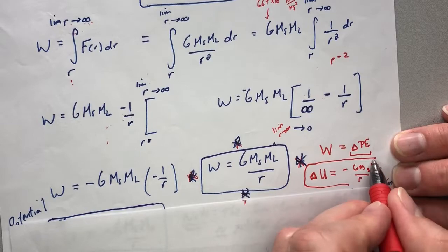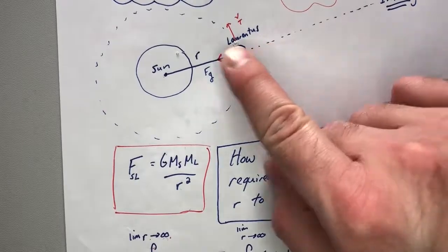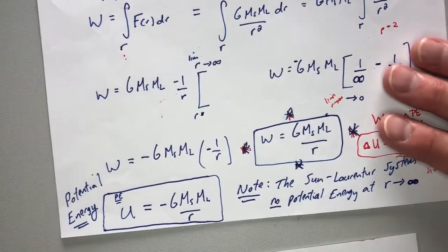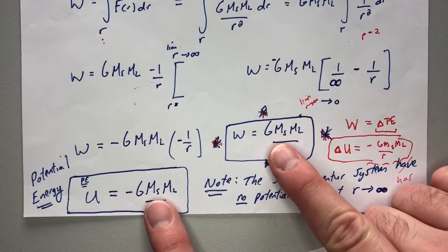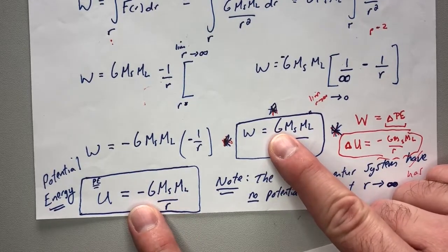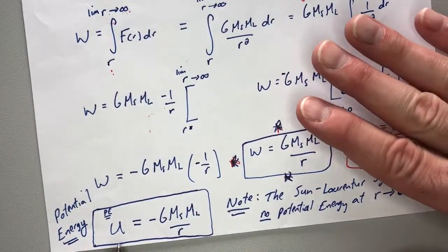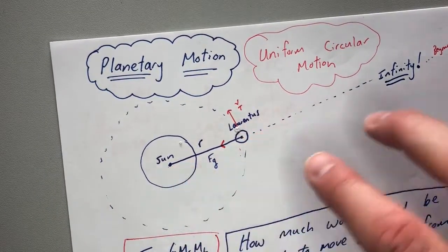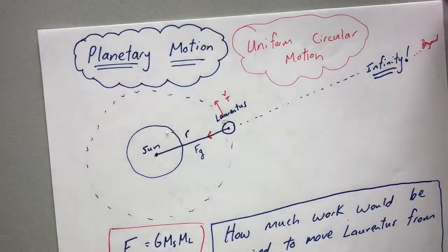On the AP test they might call it delta u or just u, because they say at infinity there's no potential energy. So the potential energy function u equals negative G M_s M_L over r. They're equal in magnitude but opposite in sign. Sometimes they won't say delta u because they define the potential energy at infinity as zero — so they just call it u. Don't let that bother you.